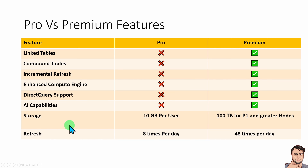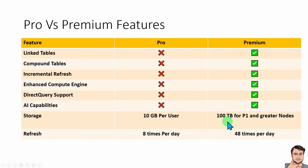For storage and refresh: with Pro you get 10 GB per user and 8 refreshes per day. With Premium capacity — 100 TB for P1 and greater nodes — it supports 48 refreshes per day for a single dataset. So these are the overall refresh limits you can work with.